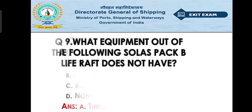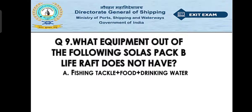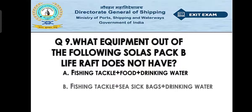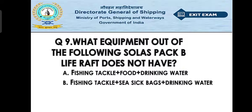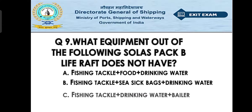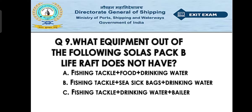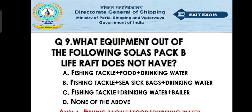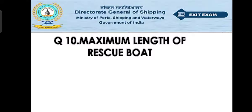Question number nine: which of the following equipment does a SOLAS pack B life raft not have? Option A: fishing tackle, food, and drinking water. Option B: fishing tackle, sea sickness bag, and drinking water. Option C: fishing tackle and bailer. Option D: none of the above. The right answer is fishing tackle — a SOLAS pack B life raft does not have fishing tackle.